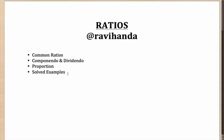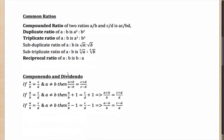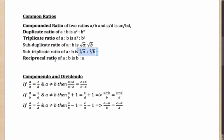We'll begin with some common ratio terms. The compounded ratio: when you have two ratios a:b and c:d, their compounded ratio is ac:bd. The duplicate ratio of a:b is a²:b². The triplicate ratio is a³:b³. The subduplicate ratio is when you take the square root of the ratios. The sub-triplicate ratio is when you take the cube root. The reciprocal ratio: if the ratio is a:b, the reciprocal is b:a.